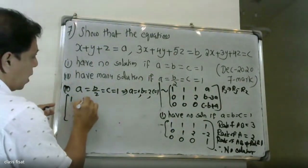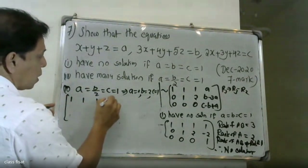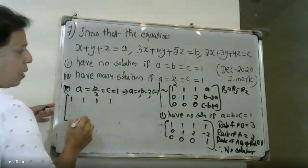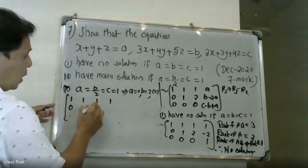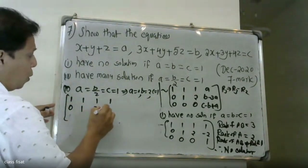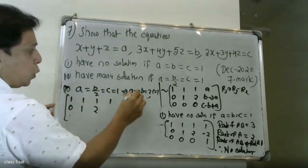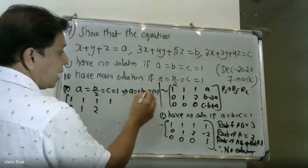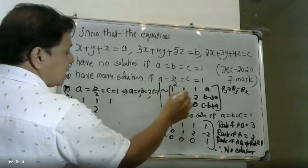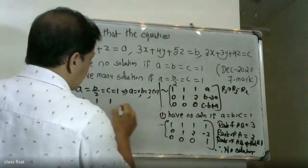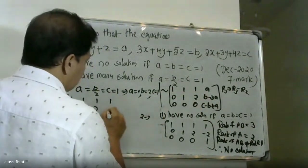Substituting: the matrix becomes 1, 1, 1, 1 in row one; 0, 1, 2 in row two; then the values 2 minus 3 gives minus 1, and 2 minus 1 in subsequent positions.